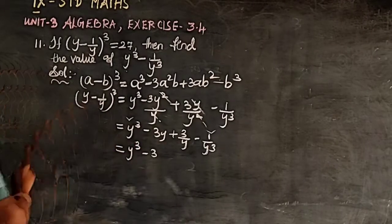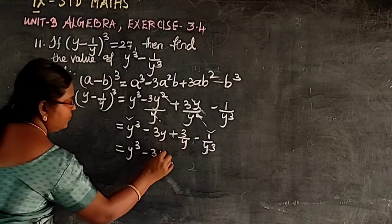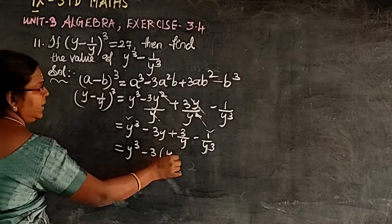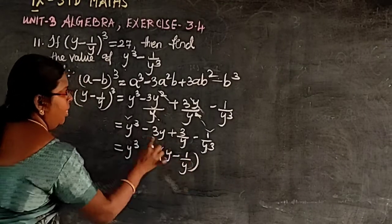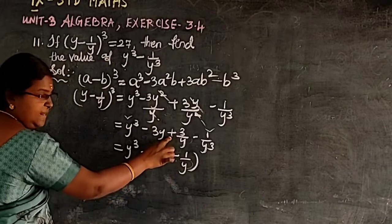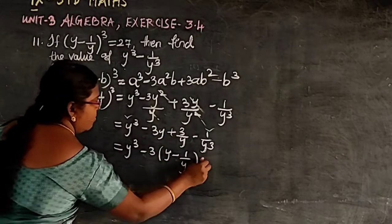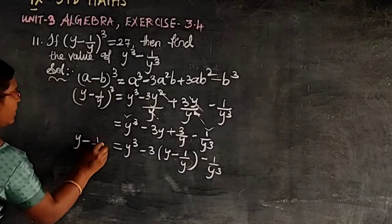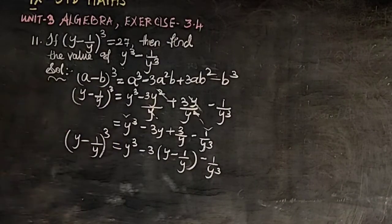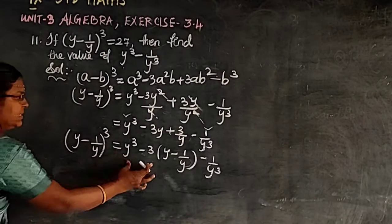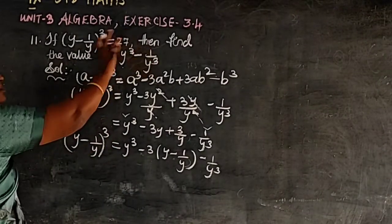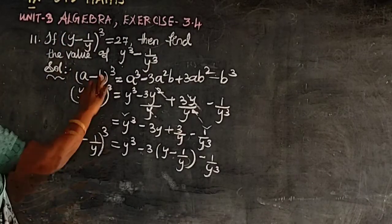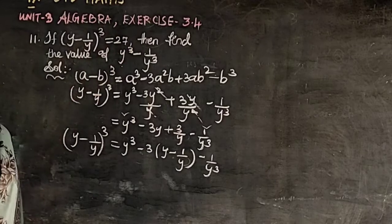Taking out -3 as a common factor from the middle terms: -3(y - 1/y). So the expression becomes: (y - 1/y)³ = y³ - 1/y³ - 3(y - 1/y). We can use this since we are given that (y - 1/y)³ = 27.